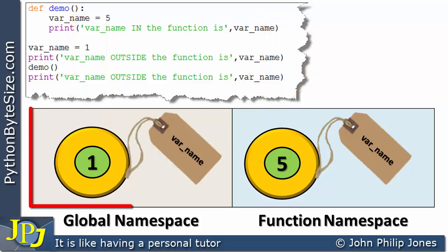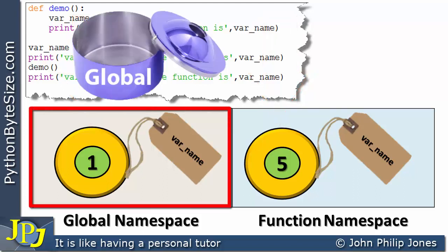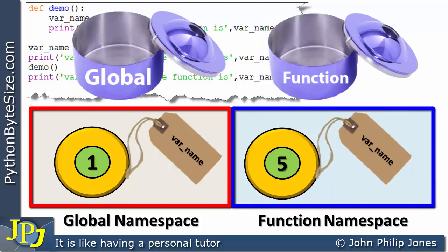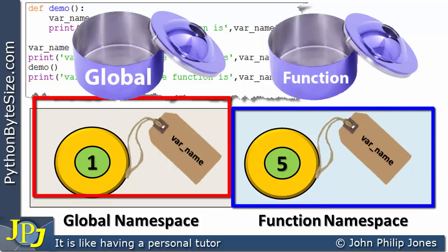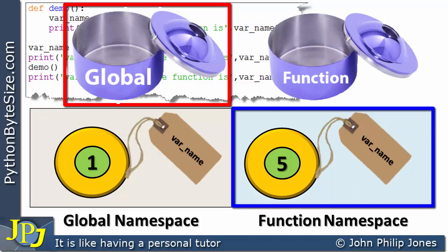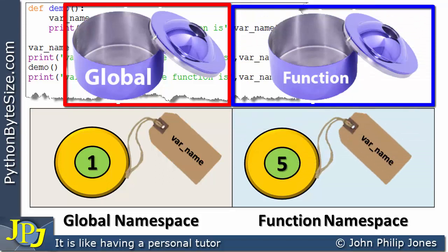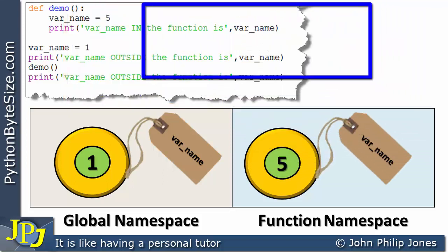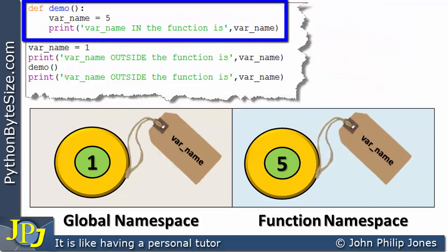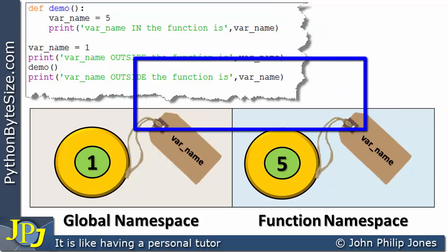Conceptually, you can think of each namespace as a tin in which all its objects appear. One tin holds all the objects created in the global area of the program, and the other holds all the objects declared in the function — in this case, just the one var_name with value 5.